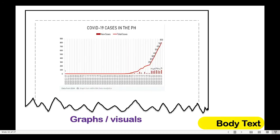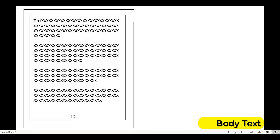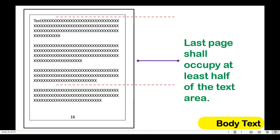Just like the images you use on pages of your learning module, graphs and visuals should be cited on the same page. Also, your last page should occupy at least half of the page, and the page number placed on the bottom center.